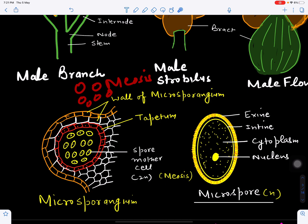From one spore mother cell, four microspores or pollen grains are produced. These are bounded by a wall. The outer wall is called the exine, which is quite thick. Inner to the exine is the intine, which is thin. Inside are the cytoplasm and nucleus.